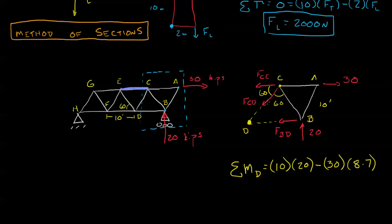Now check this out. Force CD doesn't apply any moment because it goes through point D. What we're left with is force CE times its distance, which is 8.7 feet.